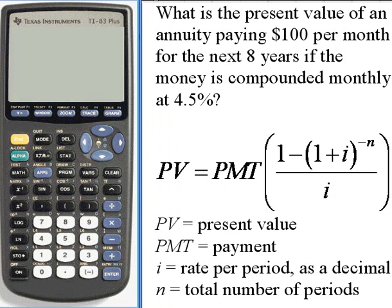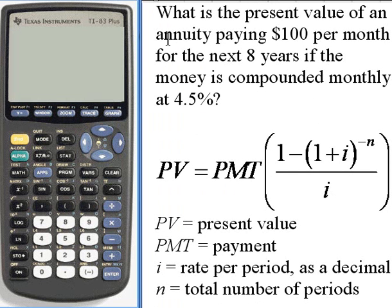Here's the problem we're going to work with. What is the present value of an annuity paying $100 per month for the next eight years if the money is compounded monthly at 4.5 percent?